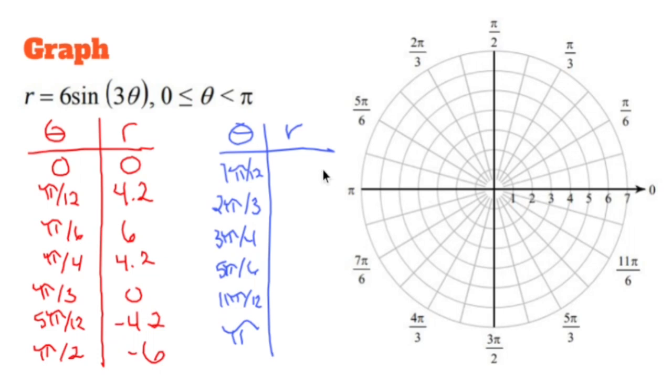You become negative 4.2. You become 0. You become 4.2. You become 6. You become 4.2. And you, even though you don't really matter, become 0.